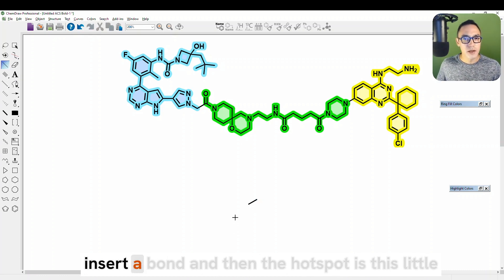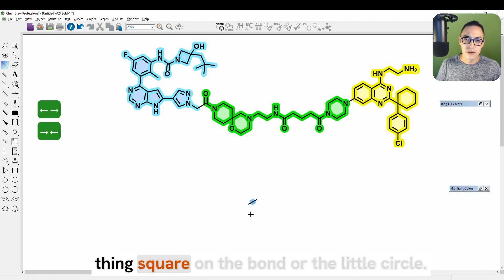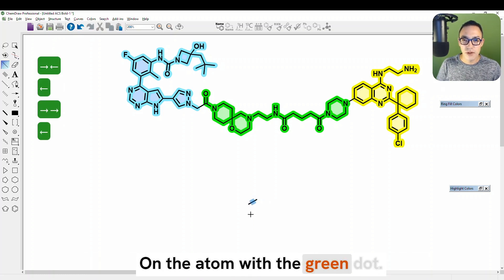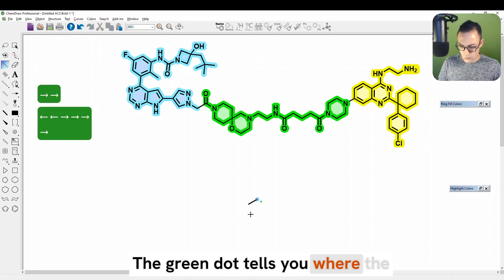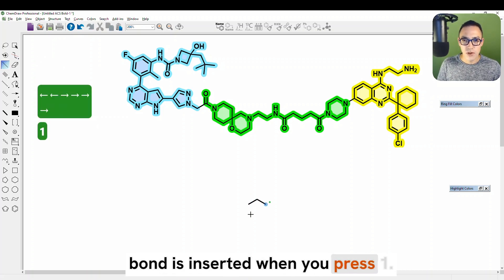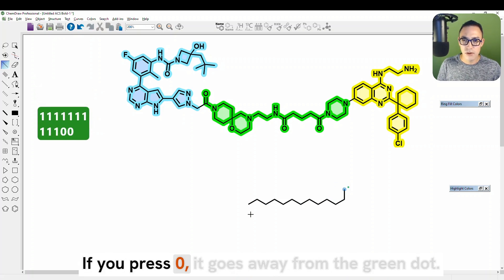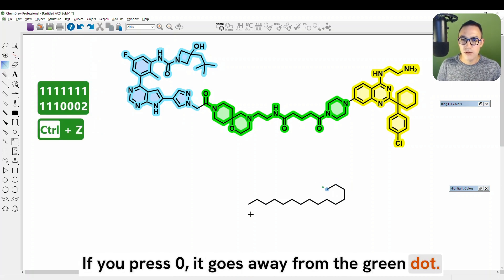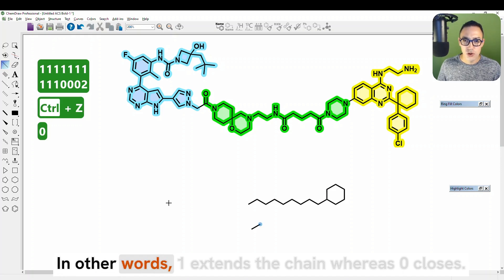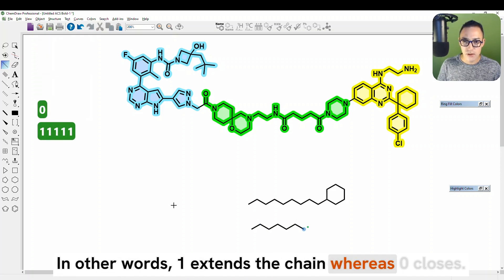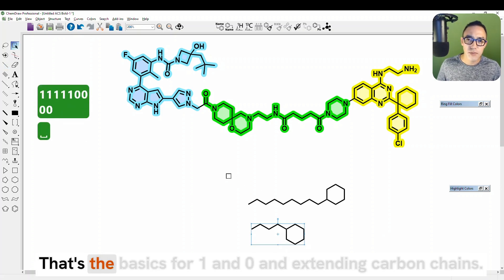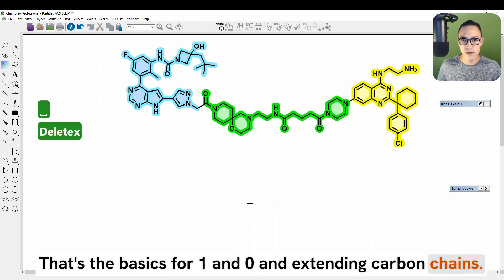The CC bond tool, if you mouse over, will tell you X or you press one or zero over the atom. And that's how the hotspot works. So you insert a bond and then the hotspot is this little square on the bond or the little circle on the atom with the green dot. The green dot tells you where the bond is inserted when you press one. So if you press one, it goes towards the green dot. If you press zero, it goes away from the green dot. In other words, one extends the chain where zero closes.